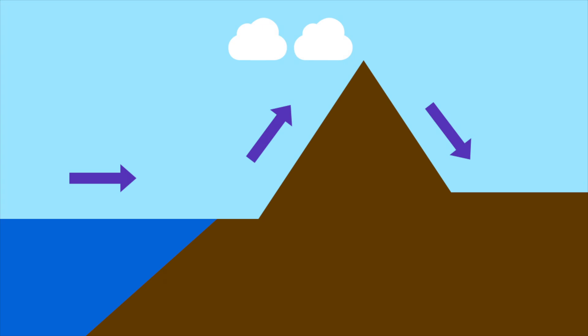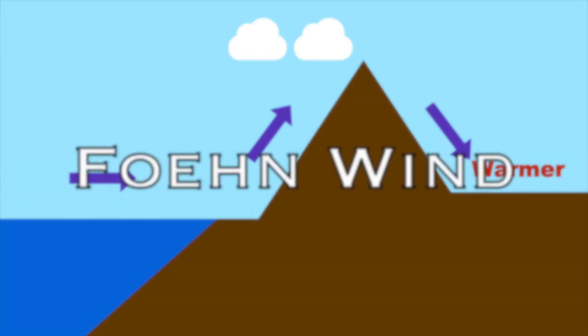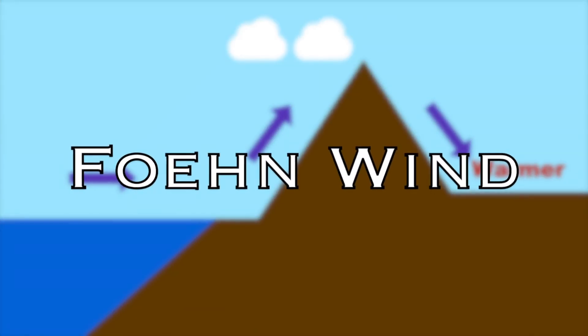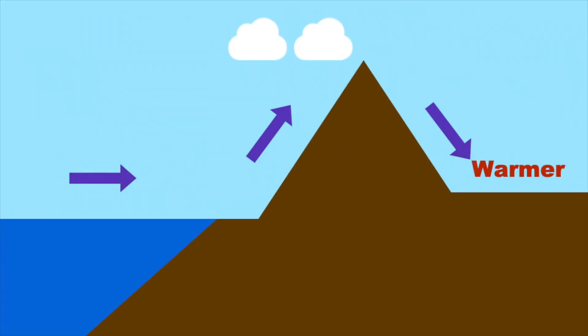On the leeward side of the mountain, the air warms by 9.8 degrees Celsius per 1000 meters, causing this side to be warmer than the other. This is what's known as a foehn wind, or a chinook wind in parts of North America.